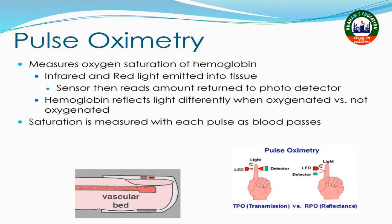Pulse oximetry is a monitor with which we measure oxygen saturation — the oxygen level in the blood. We see the saturation of oxygen in the arterial blood. There is a probe which is applied on the fingers. Usually the probe is used on the finger, toe nail bed, or ear lobe.